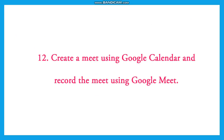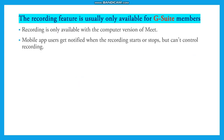Today we are going to see about the 12th program, which is to create a meet using Google Calendar and record the meet using Google Meet. First we have to schedule the meeting using Google Calendar, and when you start a meeting you can record it. The recording feature is usually only available for G Suite members — this is a very important point. Normal Google account holders don't have the facility to make a recording, and this recording is only available with the computer version of Meet. Mobile app users get notified when the recording starts or stops but they can't control the recording.